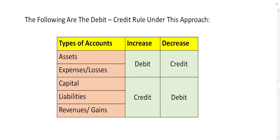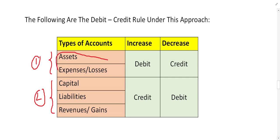In the table, the five types of accounts we discussed are organized into two groups — Group 1 and Group 2.